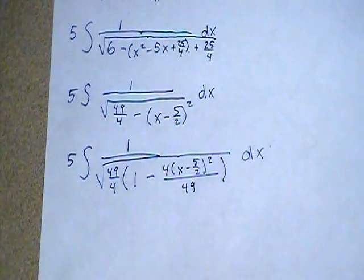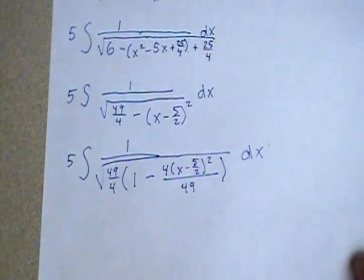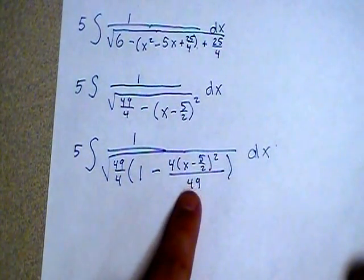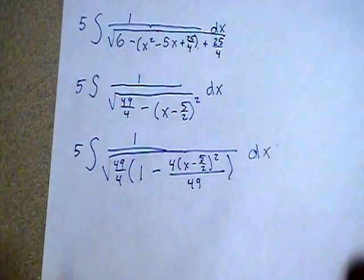The last issue is that we could try to let u equal this whole entire piece, but then u will not have a square on it. We need this term to be one thing squared, not 49 over 4 times something squared.